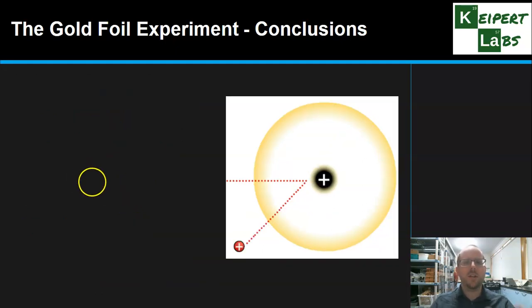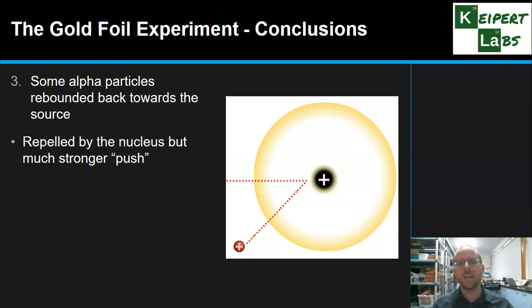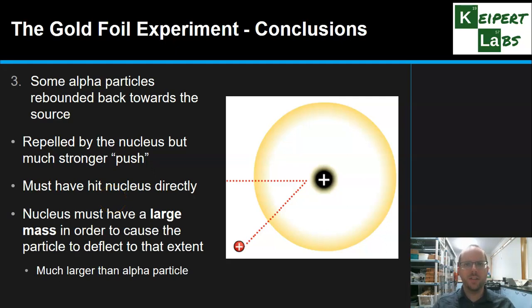Then the third one, where we looked at the ones rebounding all the way back towards the source. They must have also been repelled or pushed away by the nucleus, but there must be a much stronger push involved to make them go backwards like this, because these alpha particles are traveling at incredibly high speeds. They must have hit this nucleus, this central point, directly instead, rather than glancing off the side. But in order for that to result in such a big deflection, the nucleus must have a large mass. It must be much larger than an alpha particle, which were known to be really small. So gold atoms must have a really big nucleus that's really positively charged and has a very large mass.